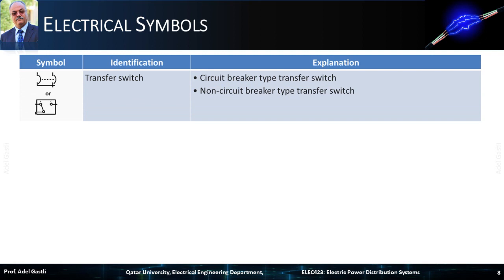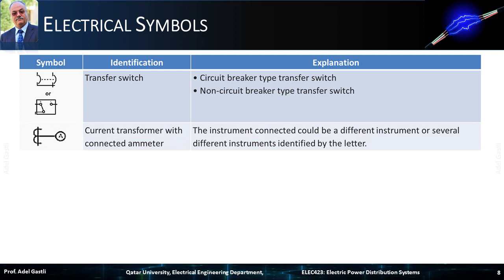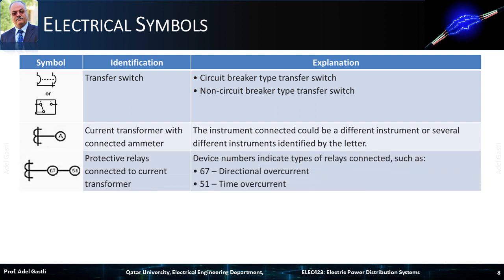The first symbol represents a transfer switch, which could be a circuit breaker type or non-circuit breaker type transfer switch. The next symbol represents a current transformer with a connected ammeter. The instrument connected could be a different instrument or several different instruments identified by their corresponding letter. The last symbol represents protective relays connected to a current transformer. Device numbers indicate types of connected relays, such as 67 for directional over current relay and 51 for time over current relay.